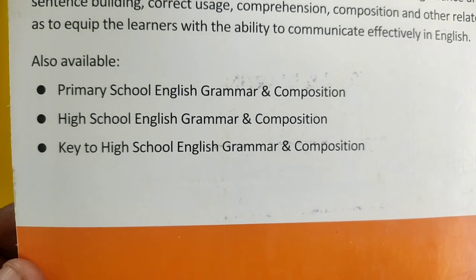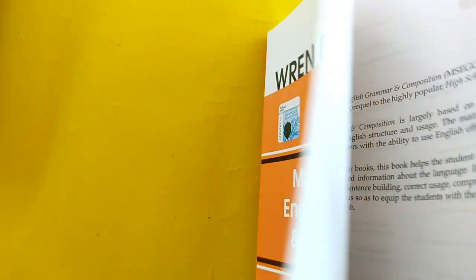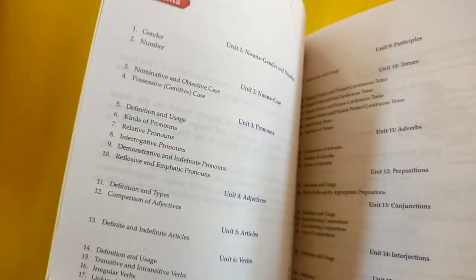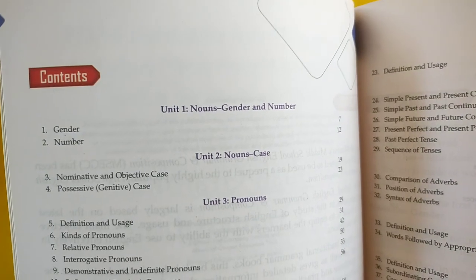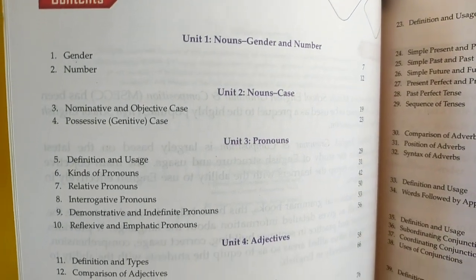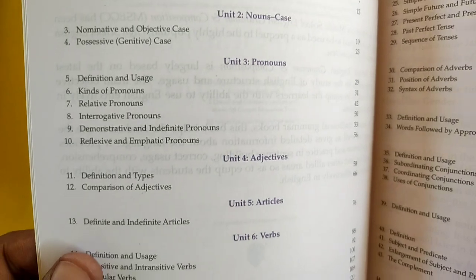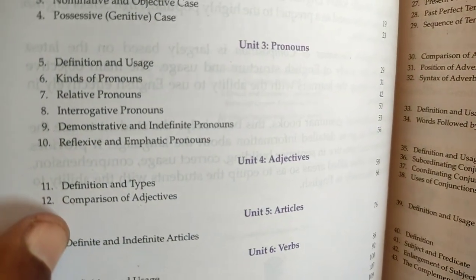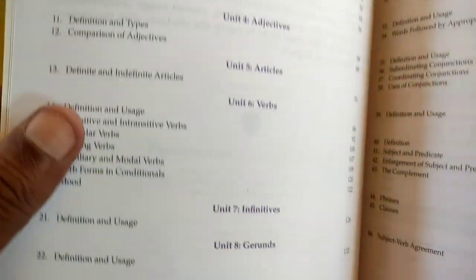You can also have the Key to High School English Grammar and Composition. Now let me show you some content and chapters in this book. This is the contents page — gender, number, nominative and collective case, definition and usage, kinds of pronouns, and pronouns.